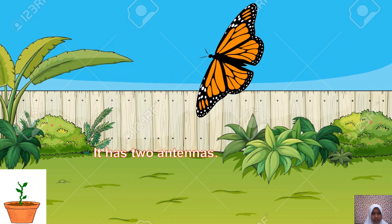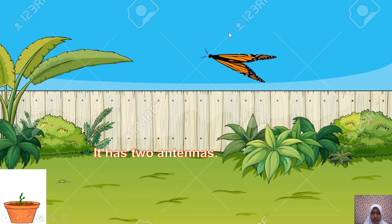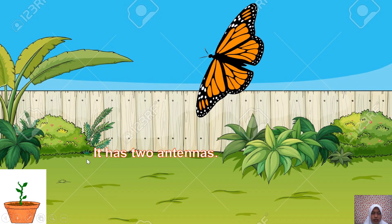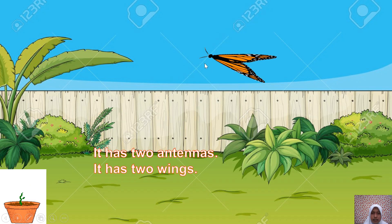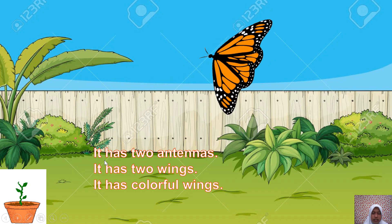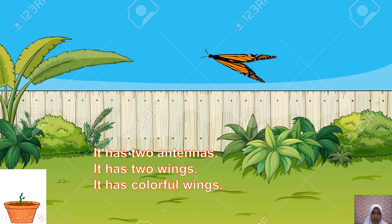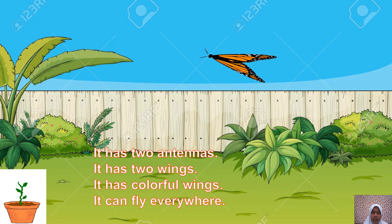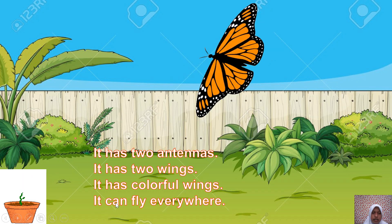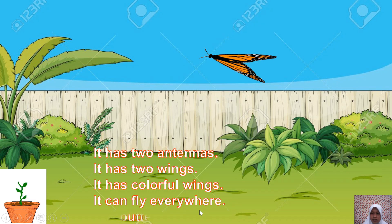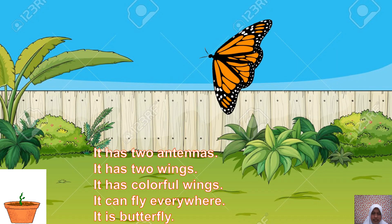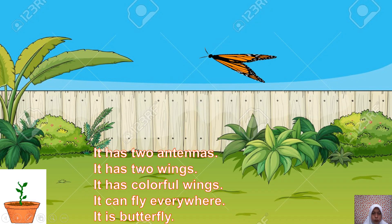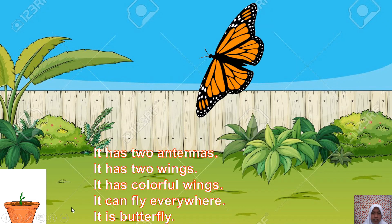Do you love this animal? The characteristics are: it has two antennas, it has two wings, it has colorful wings — colorful itu berwarna-warni, ada warna orange, black, white, and others. It can fly everywhere — hewan itu dapat terbang ke mana-mana. So it is a butterfly. Kalau ada ciri-ciri: two antennas, two wings, colorful wings, and it can fly everywhere — so it is a butterfly.